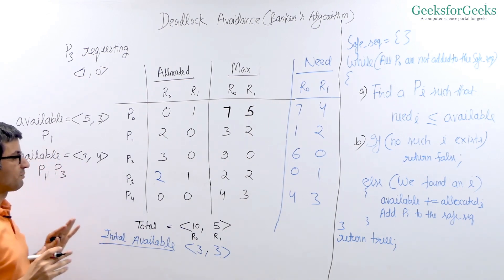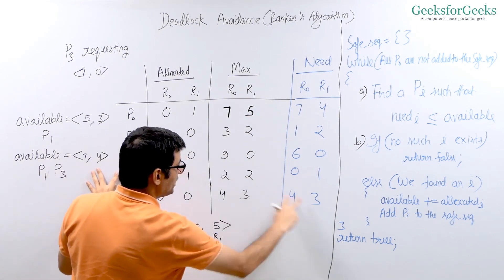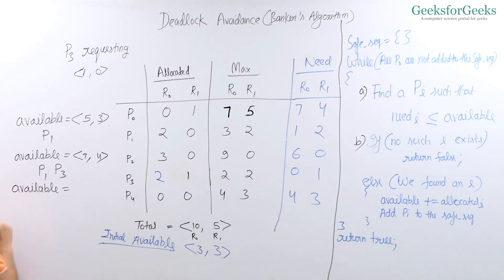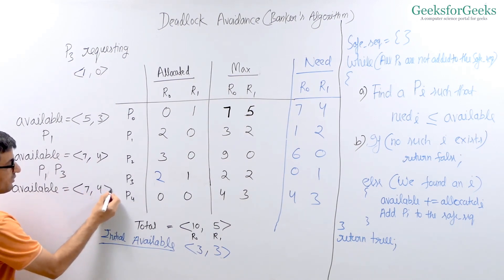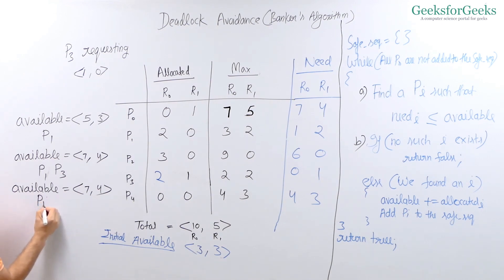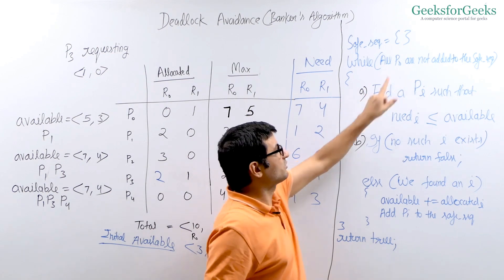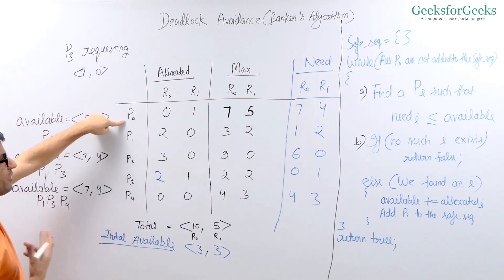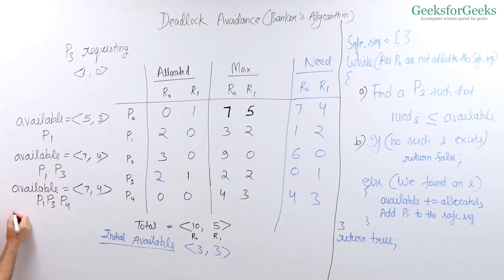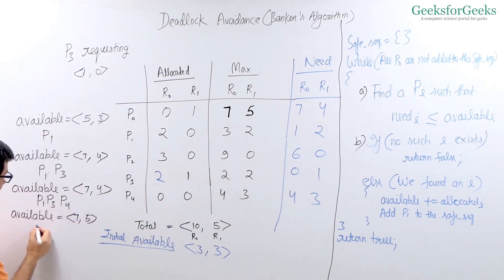We search again. P4's need is (4, 3) and available is (7, 4) — P4 satisfies the criteria. We add P4's allocated (0, 0) to available, keeping it at (7, 4), and add P4 to the safe sequence: P1, P3, P4. There are still processes not added, so we continue. P0's need is (7, 4) and available is (7, 4) — P0 satisfies the criteria. We add P0's allocated (0, 1) to available, getting (7, 5), and add P0 to the safe sequence: P1, P3, P4, P0.